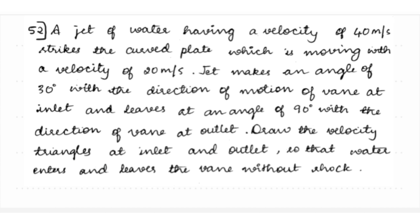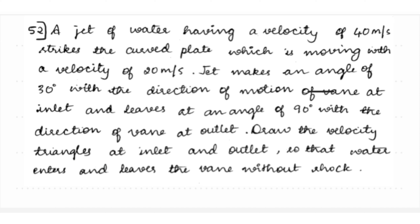The velocity of jet at inlet v1 is equal to 40 meter per second. The velocity of plate u1 is equal to u2 is equal to u is equal to 20 meter per second. The angle alpha 1 is equal to 30 degrees at inlet, and alpha 2 is equal to 90 degrees, meaning the jet leaves at an angle of 90 degrees with the direction of the vane at outlet.